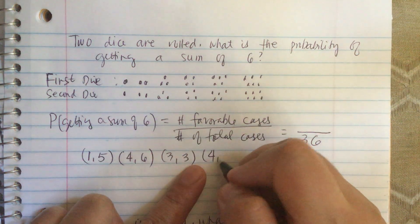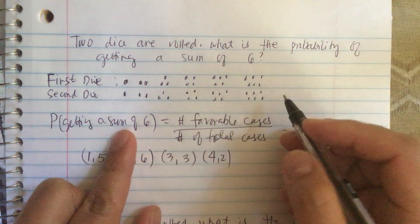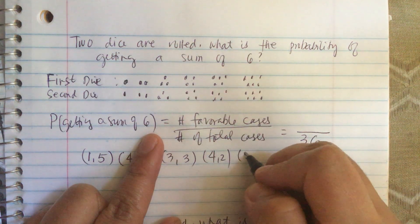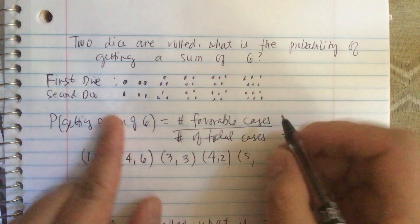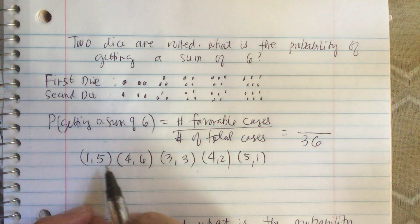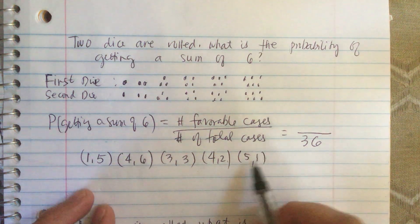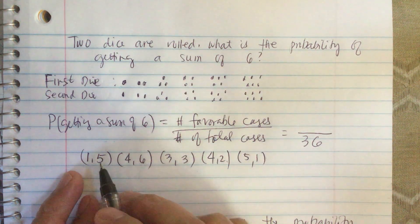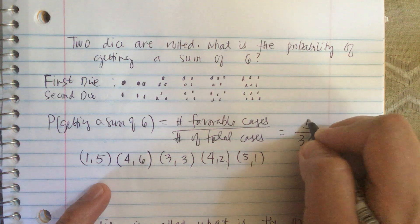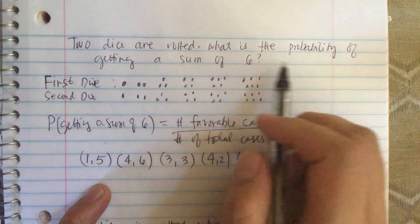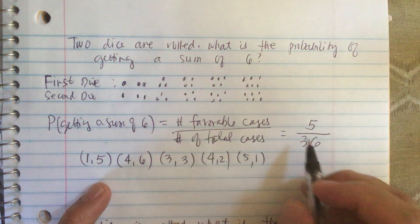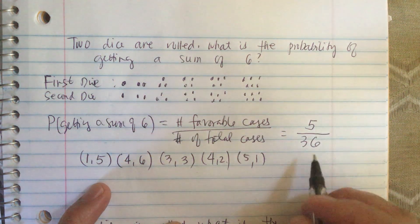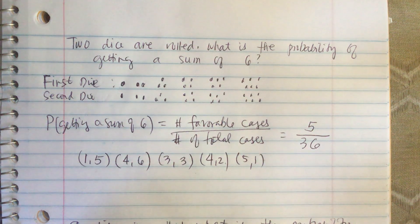And then five on the first die and one on the second die. So counting them: one, two, three, four, five — the total number of favorable cases is five. Therefore, the probability of getting a sum of six when two dice are rolled is five over thirty-six.